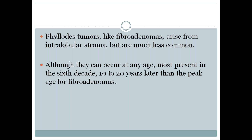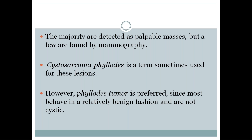Although phyllodes tumors can occur at any age, most present in the sixth decade, that is 10 to 20 years later than the peak age for fibroadenomas. Fibroadenomas occur usually between 35 to 45 years, and phyllodes tumor occurs 10 to 20 years later, in the sixth decade. The majority are detected as palpable masses clinically, but a few are found by mammography.